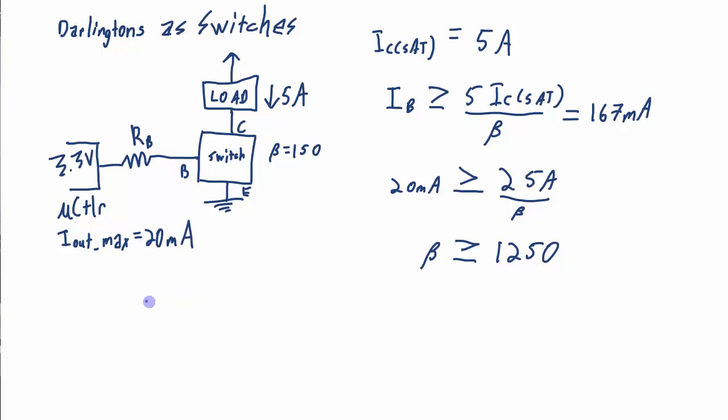And basically how would I do that? Well, let's say I do have this beta that's equal to 7000. And I decide that I want to set my IB to be 5 milliamps.